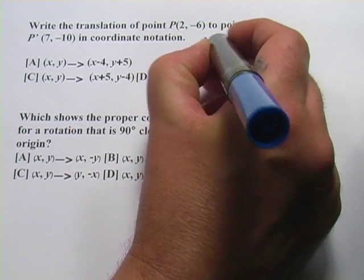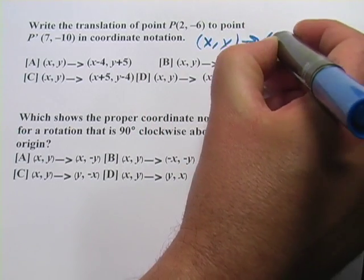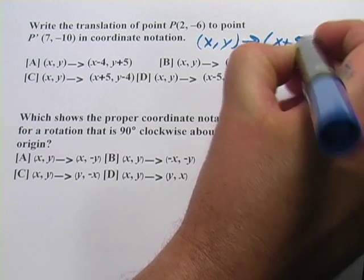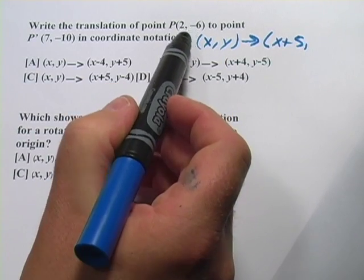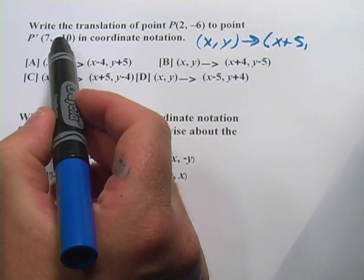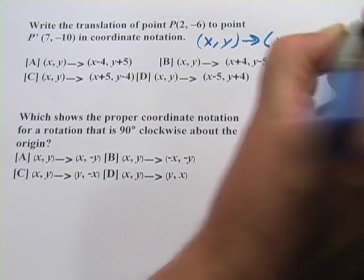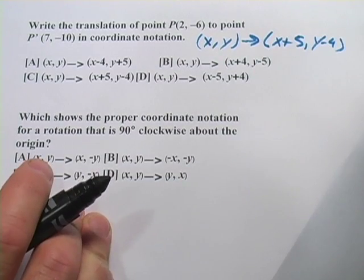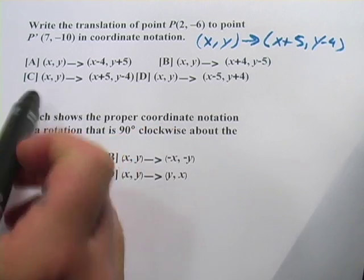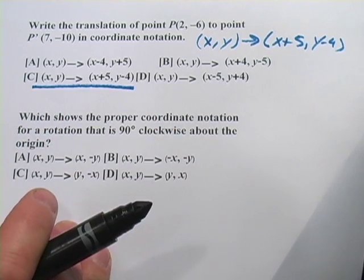So we'd say x, y goes to x plus 5, comma. And what's the change in the y? Well, negative 6 to negative 10 is minus 4, so that would be y minus 4. And that would be our answer — it looks like C corresponds to that one.